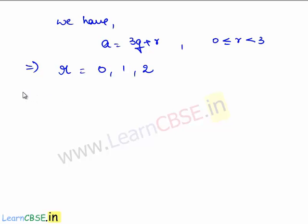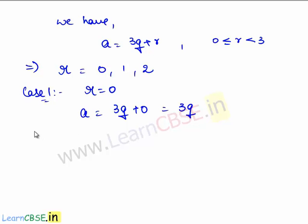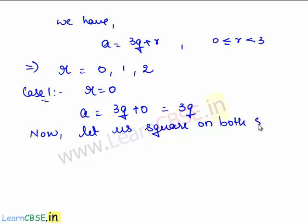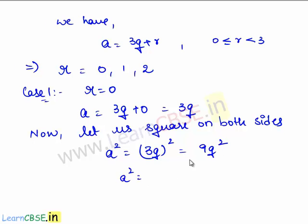First, let us take r equal to 0. This implies a equals 3q plus 0, which is equal to 3q. Now squaring both sides, a squared equals (3q) squared, which is 9q squared. 9q squared can be written as 3 times 3q squared. So this is of the form 3m, where m equals 3q squared.